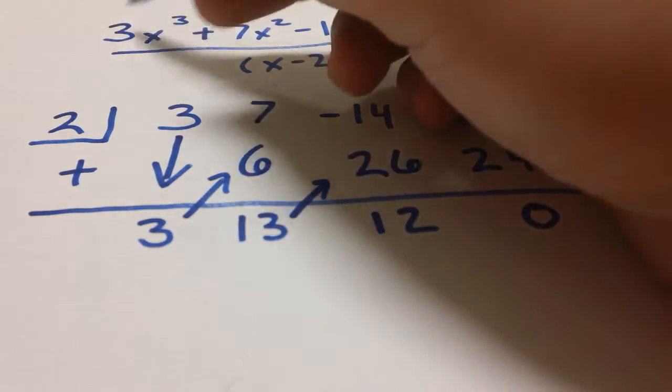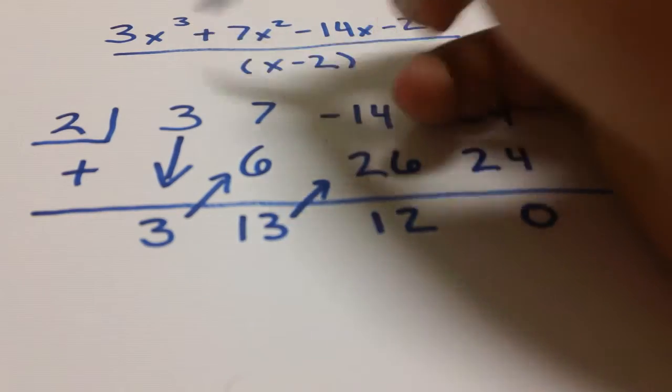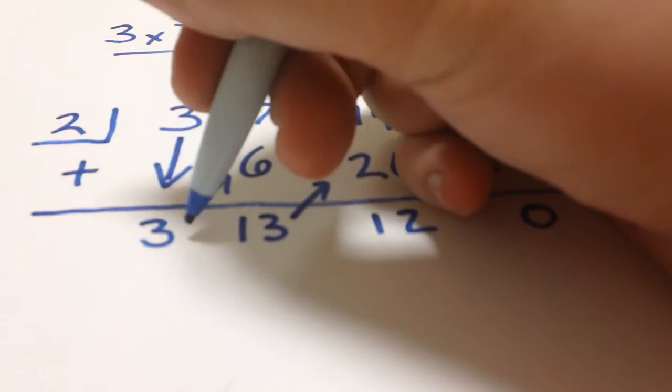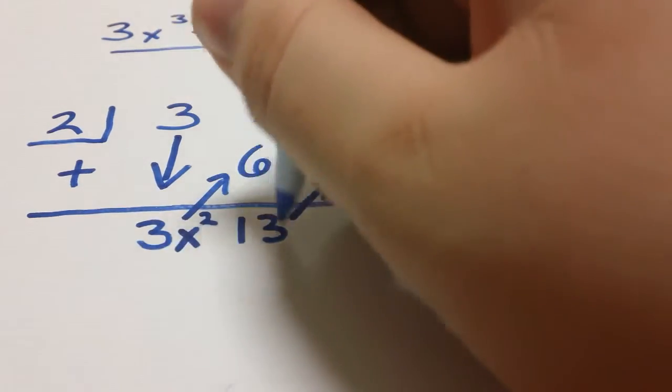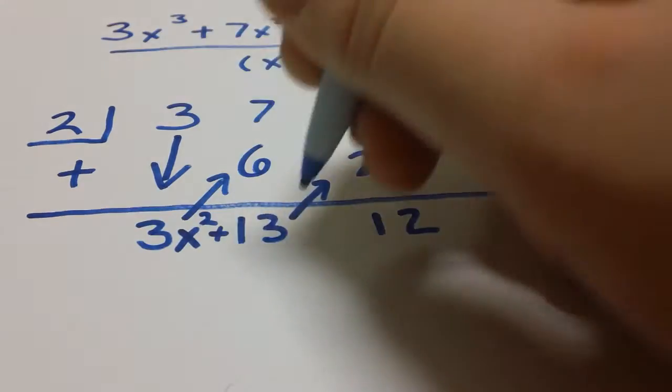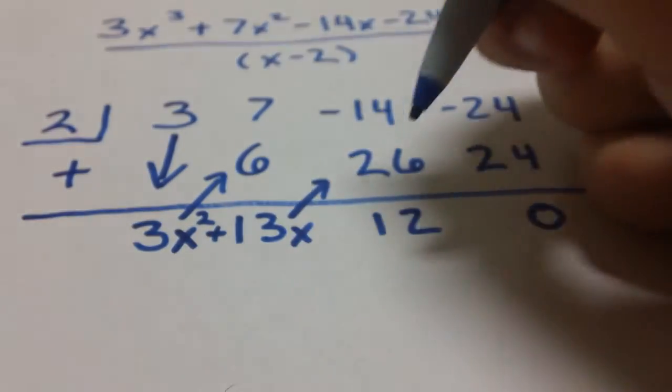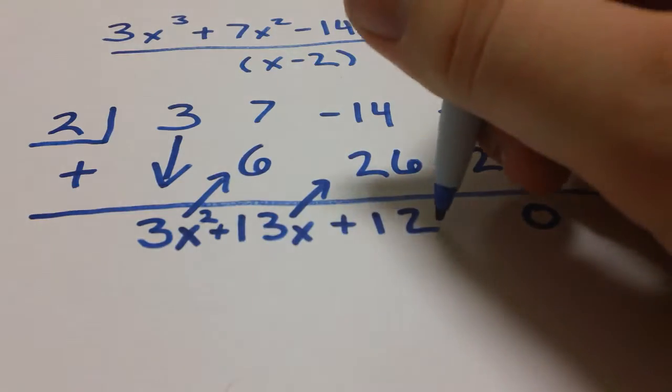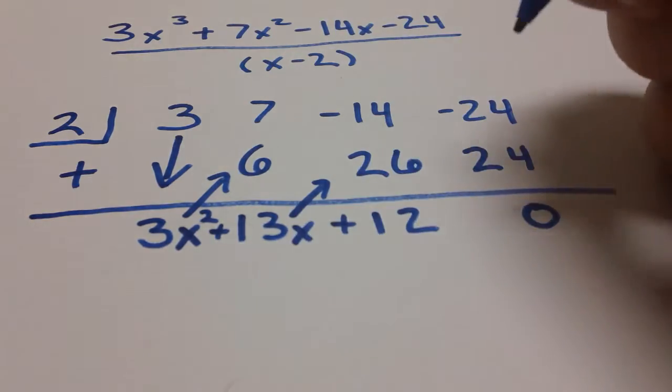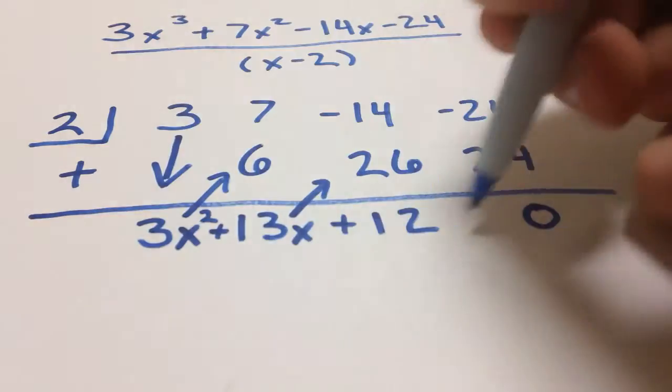Since we had an x to the third in our original problem, it would only make sense that our biggest power is going to be x to the second down here. So I'm going to go ahead and fill that in: x to the second. Since this is a positive 13 we'll write a plus, and then since x to the second was our last x variable, just x. You can't get any smaller than just x, so no variable there and 12 was positive so plus. This is our answer: 3x squared plus 13x plus 12.